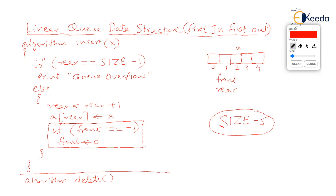Whatever you insert first in the queue will always be taken out first. For example, imagine you insert 10, then 20, then 30 in the queue. When you delete from the queue, 10 will be deleted first because it was inserted first, then 20, and finally 30. Elements are always deleted in first in first out manner.